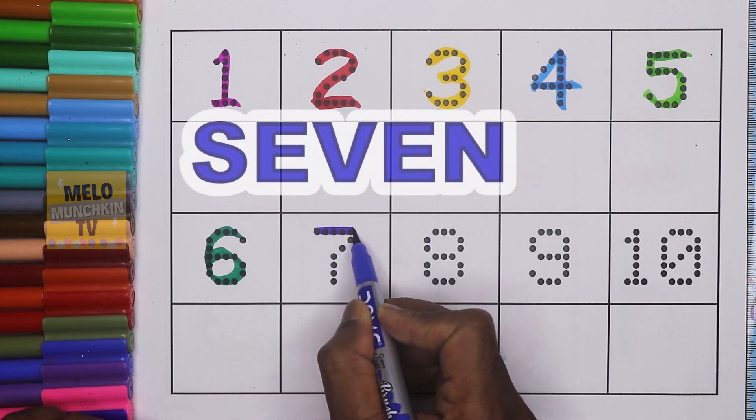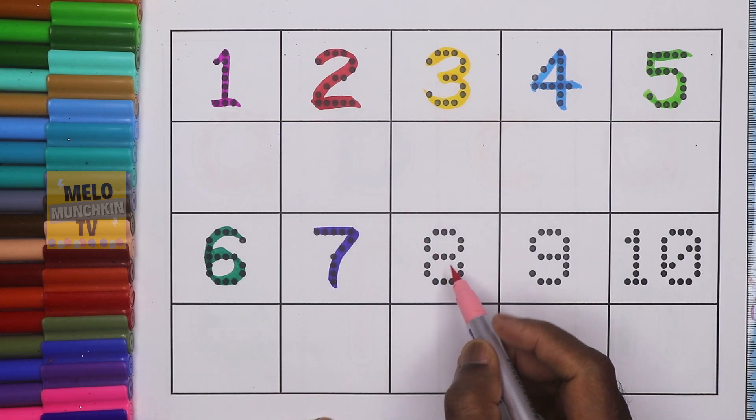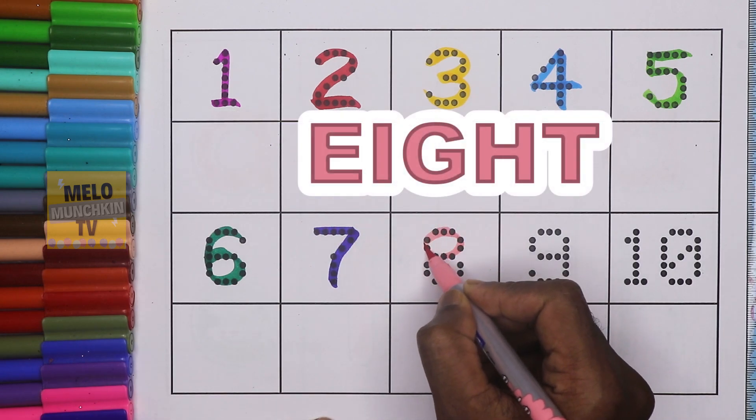Dark blue color. This is number 7. S-E-V-E-N. 7. Light pink color. This is number 8. E-I-G-H-T. 8.